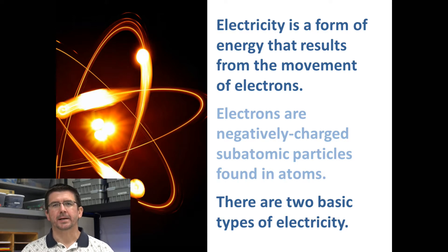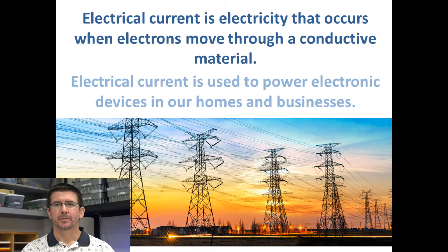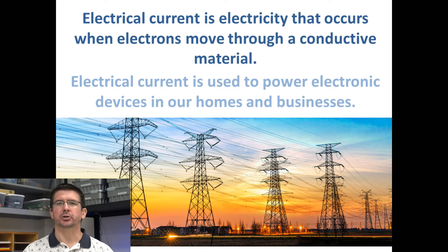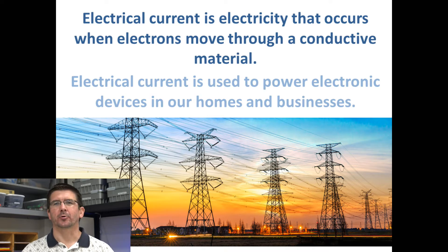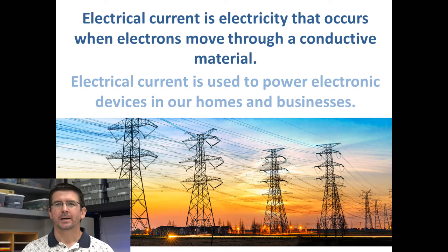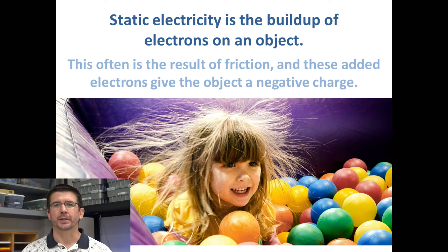Electricity can exist in a couple of different states, and that's what we want to briefly talk about — the two states of electricity. The first state is the one that comes to mind for most people when they think about electrical energy, and that's electrical current. Electrical current is the movement or flow of electrons through a conductive material — through power lines, through cords into our devices to power them. We looked at electrical current a lot last year during our energy unit, but today we're focusing on the second type: static electricity.